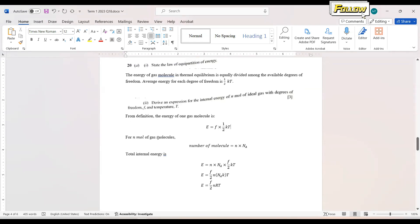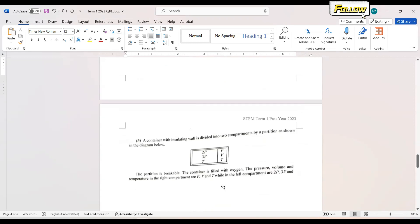To answer this question, we need to take note that it is about N mol of gas molecules, which has the number of molecules equal to N multiplied by the Avogadro number. So the total energy will be equal to N times NA times F over 2 kT. Arrange the formulas, and you can also substitute NA times K equals R. So we have energy equals F over 2 nRT.